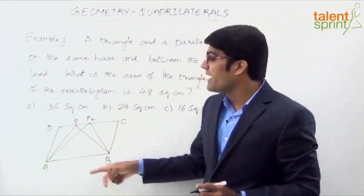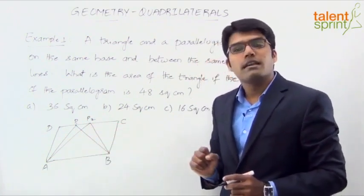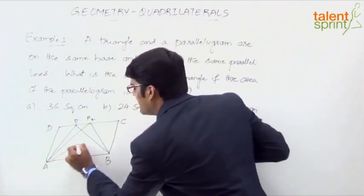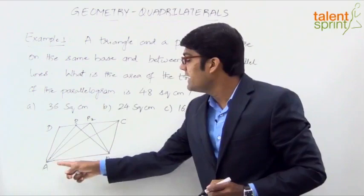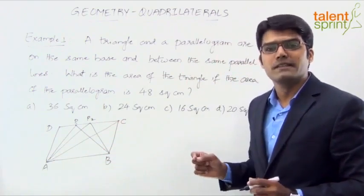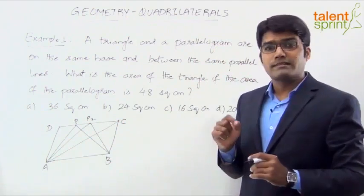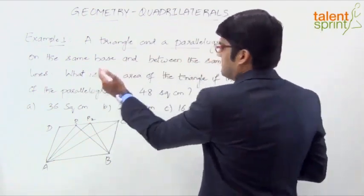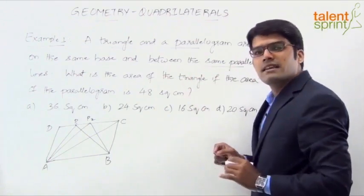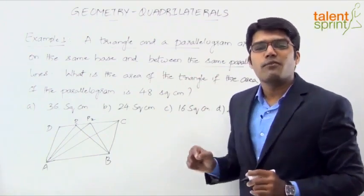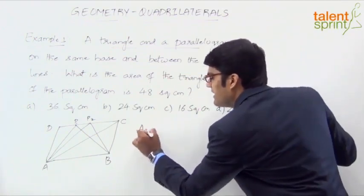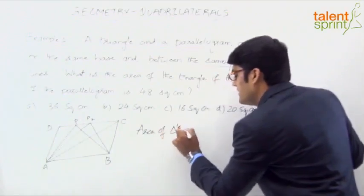We can say the area of the parallelogram ABCD is twice the area of the triangle. Or the point could be C itself — the triangle ABC — and the area of triangle ABC will be half of the area of parallelogram ABCD. So the simple point here is: when a triangle and a parallelogram are on the same base and between the same parallel lines, the area of the triangle is half the area of the parallelogram.